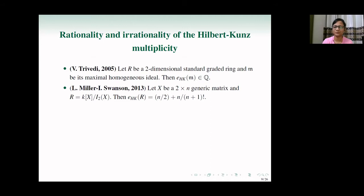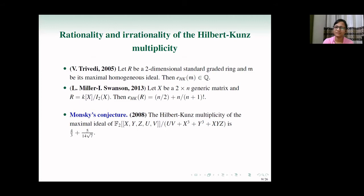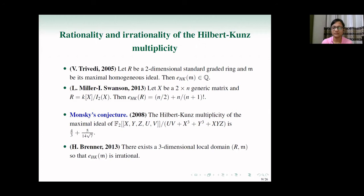Now let's look at cases where the Hilbert-Kunz multiplicity is known or conjectured to be irrational. Monsky (2008) conjectured that the Hilbert-Kunz multiplicity of the maximal ideal of the power series ring F_2[[x, y, z, u, v]] / (uv + x^3 + y^3 + xyz) is the irrational number 4/3 + 5/(14√7). This remains an open conjecture, though Monsky provided substantial computational evidence. Renault (2013) gave a class of three-dimensional local domains with irrational Hilbert-Kunz multiplicity.